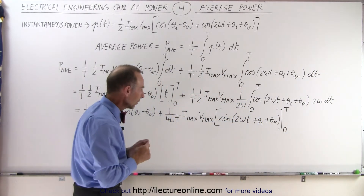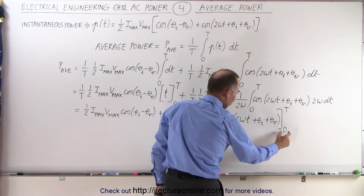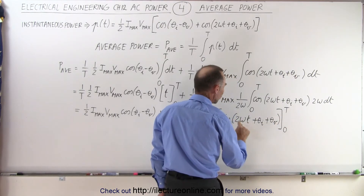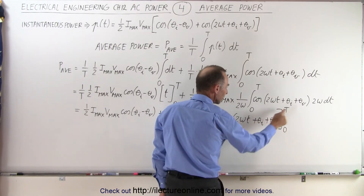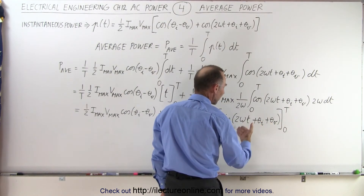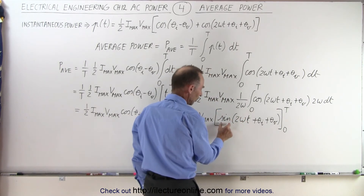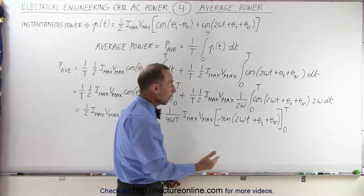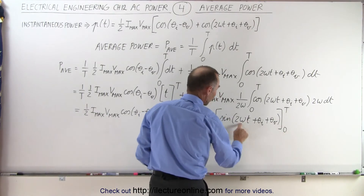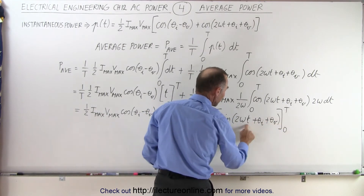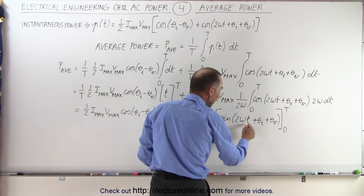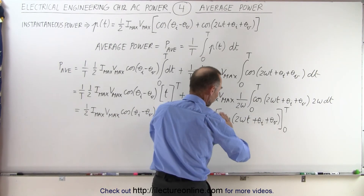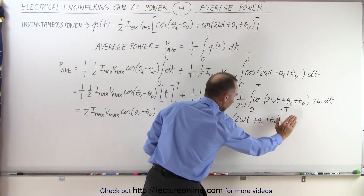Now let's evaluate that second integral. When we plug in 0, we get the sine of just the phase angles. When we plug in t (the period), 2ω times the period brings us back to the same value as sine of 0. So we end up with sine of the phase angles minus sine of the phase angles, which equals 0. This whole second term goes to 0.